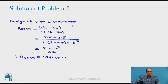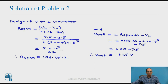Design of V-to-I converter: R-span is given by (V-B minus V-A) divided by 2 × (I-B minus I-A). Substituting values — (7.5 minus 2.5) divided by 2 × (20 minus 4) × 10⁻³ — this comes to 156.25 ohm. V-reference is given by 2 × R-span × I-B minus V-B. Substituting: R-span is 156.25 ohm, I-B is 20 mA, and V-B is 7.5 V. Therefore, V-reference equals minus 1.25 V.